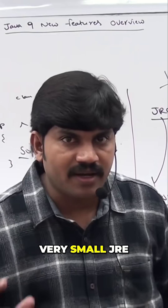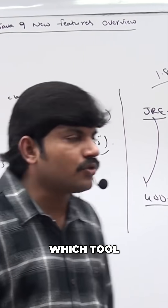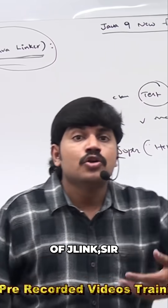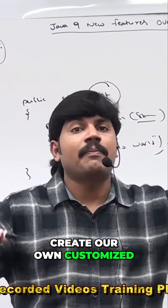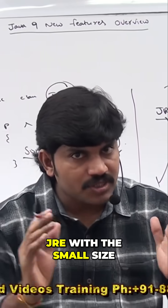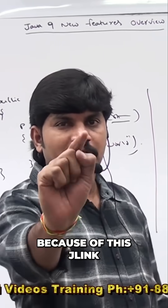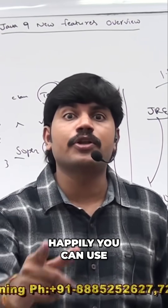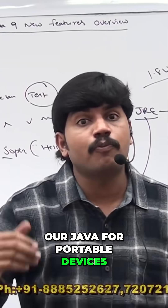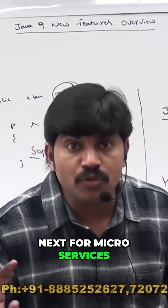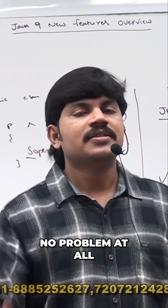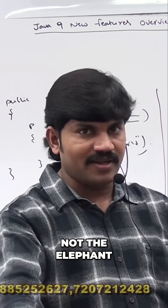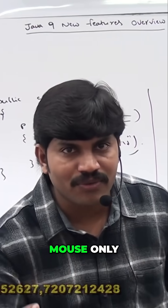To create very small, customized JREs, we should use the tool called 'jlink'. The purpose of jlink is to create our own customized JREs with a small size. Because of this jlink concept, from Java 9 version onwards, you can happily use Java for portable devices, microservices, and IoT devices — no problem at all.